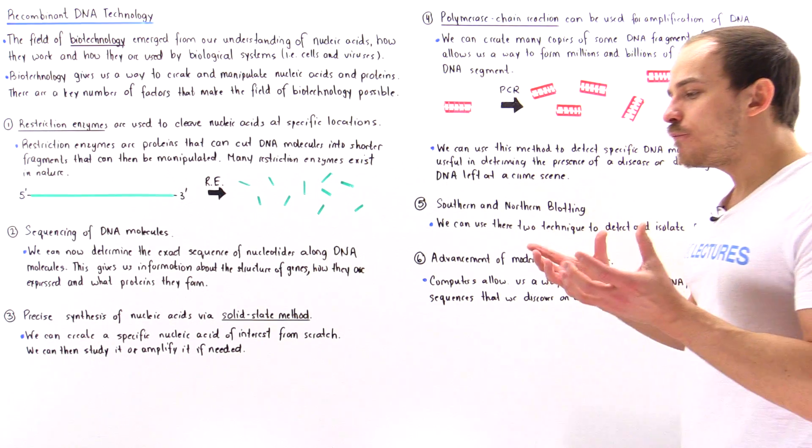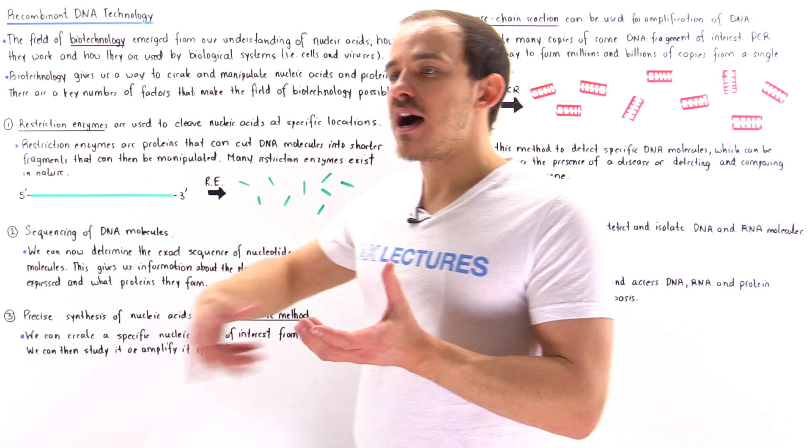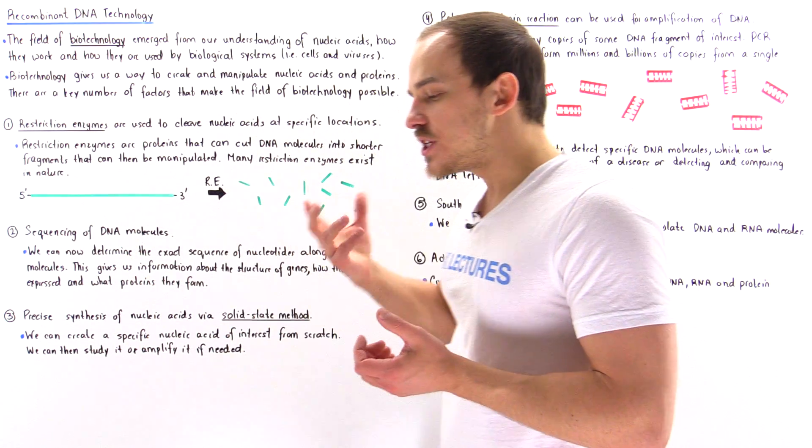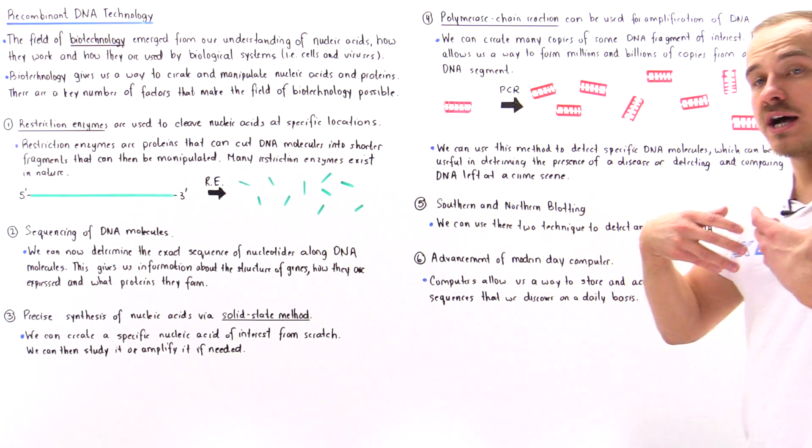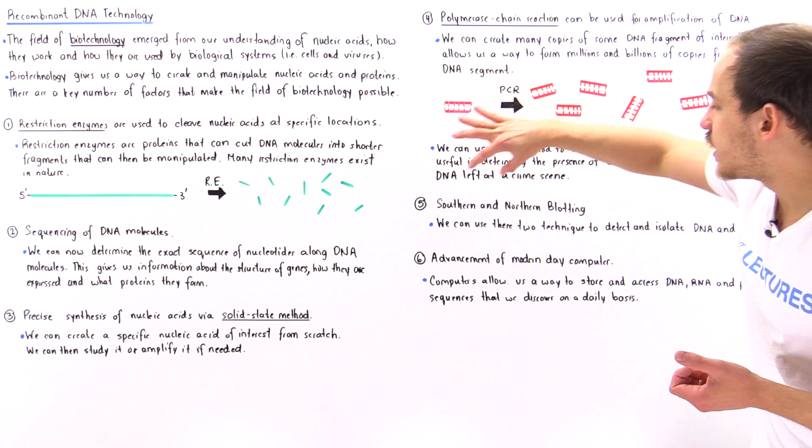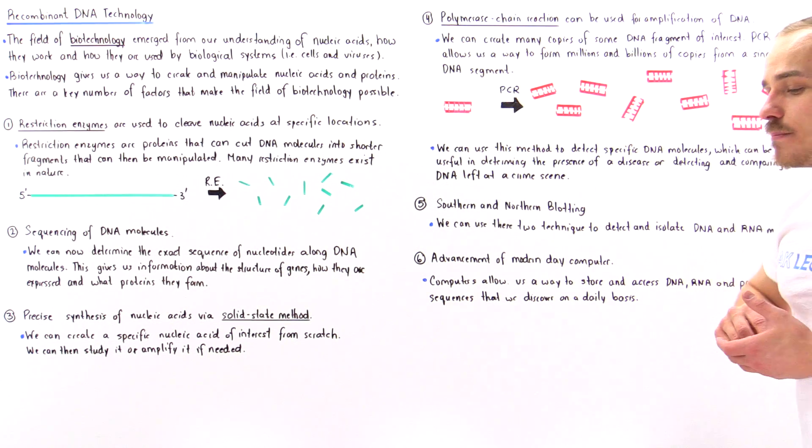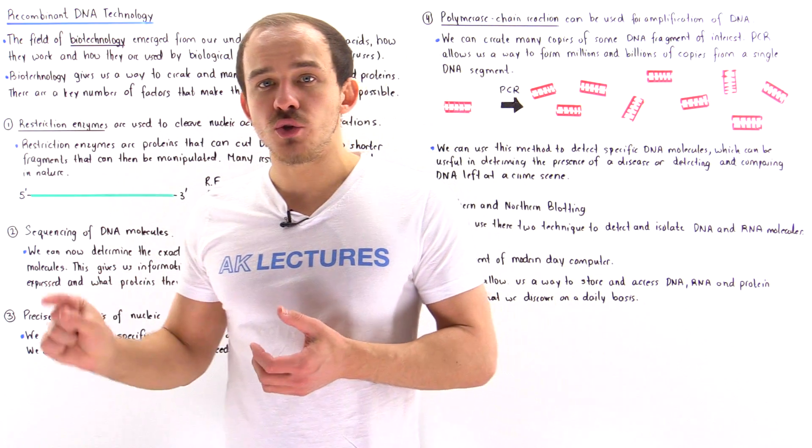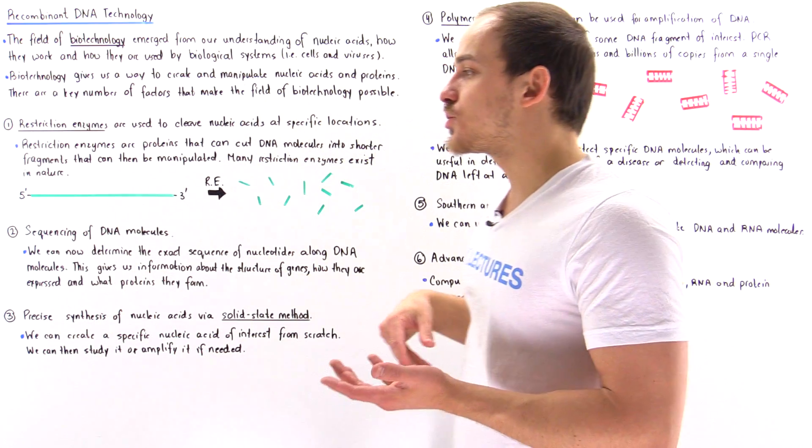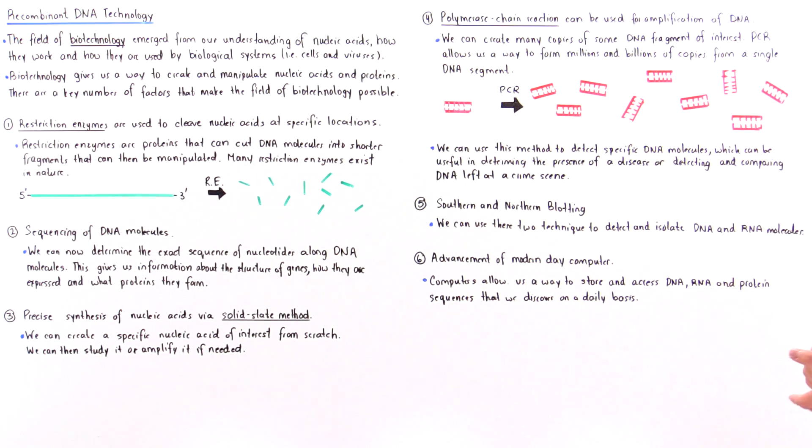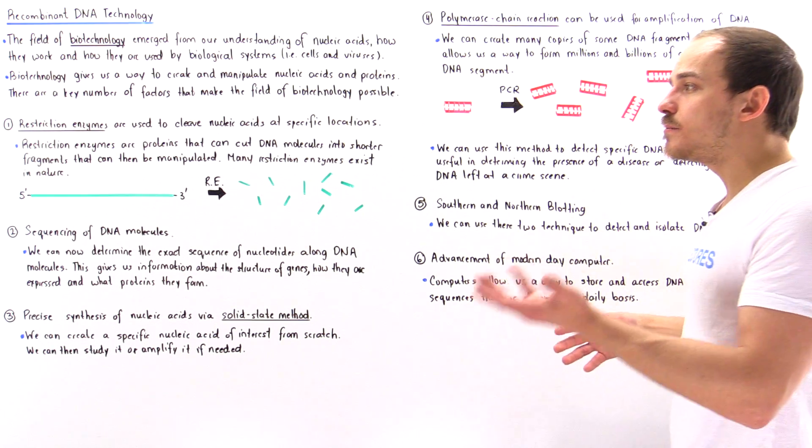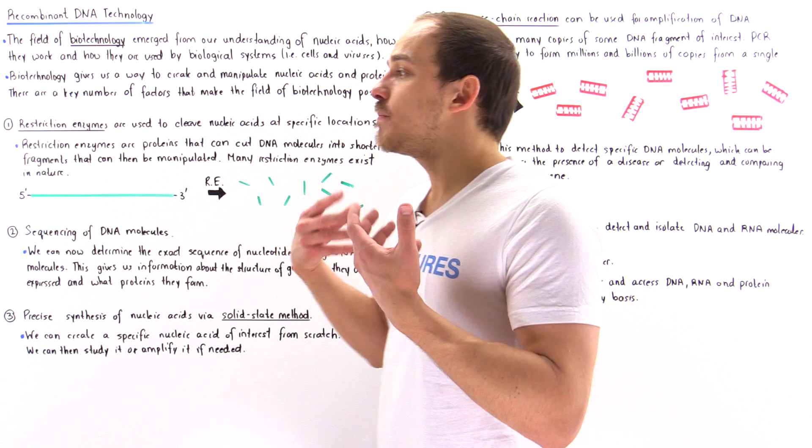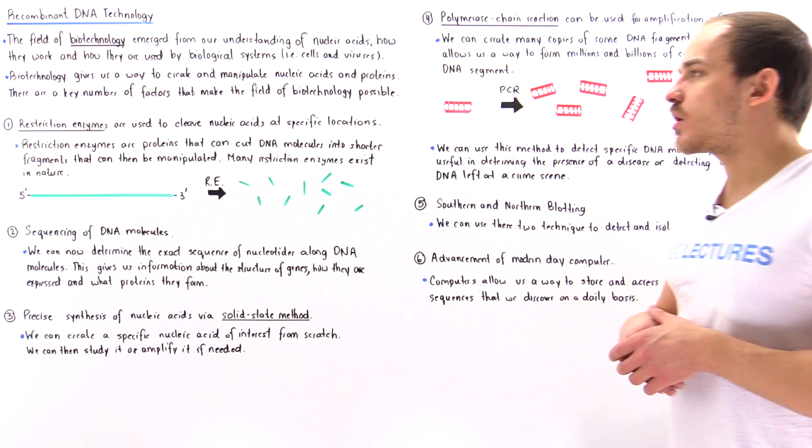Now, factor number five is if we have a collection of different types of DNA molecules or RNA molecules, we can use a specific method or two methods. We have southern blotting and we have northern blotting to basically determine exactly what the DNA molecule of interest within that mixture is. And this process is very similar to the process of western blotting that we spoke about when we discuss proteins, their purification and their structure.